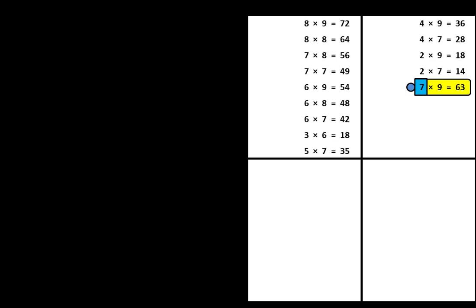I may also realize that I can apply that idea to some of the facts that have no dots. There are some equations in this list that have the factor 9. 2 times 9 must be 2 less than 20 — what number is 2 less than 20? It's 18. 4 times 9 must be 4 less than 40 — what number is 4 less than 40? It's 36. 6 times 9 must be 6 less than 60 — what number is 6 less than 60? It's 54. 8 times 9 must be 8 less than 80 — what number is 8 less than 80? It's 72. I might not know the answers to these facts yet, but I'm starting to make a new connection that will be very useful.